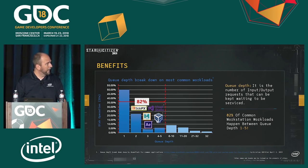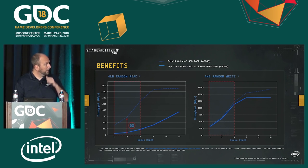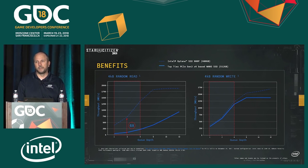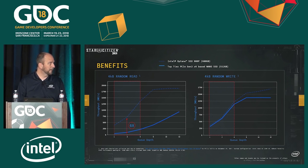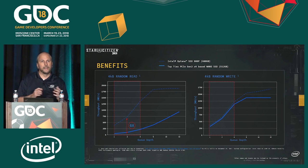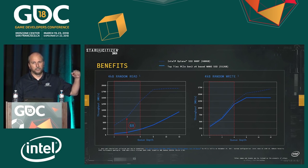In terms of actual performance metrics at these queue depths, the random read and random write — in a workstation environment, most things are random. For random read, which is most of what workstation environments do, you'll see up to a 6x performance differential over a very high-performance NVMe NAND device. That's a huge difference in usable performance — not theoretical, but something you can actually see and feel day-to-day. For writes, the differential at low queue depth isn't quite as high, but as you get to higher queue depths, Optane continues to accelerate where a NAND device may taper off and stop.